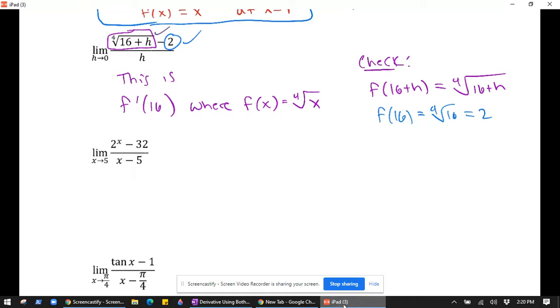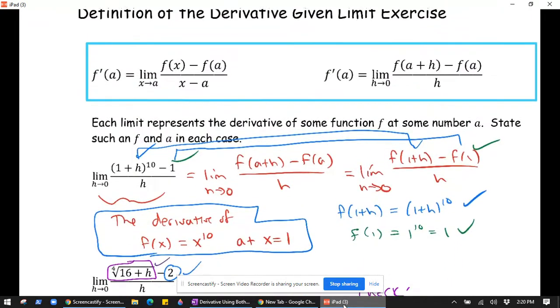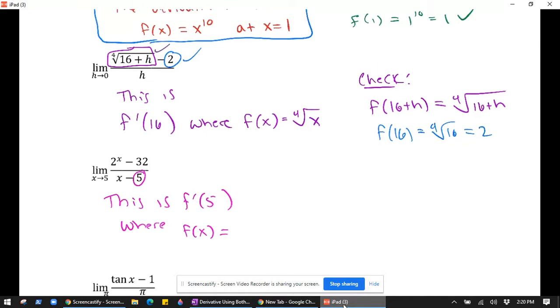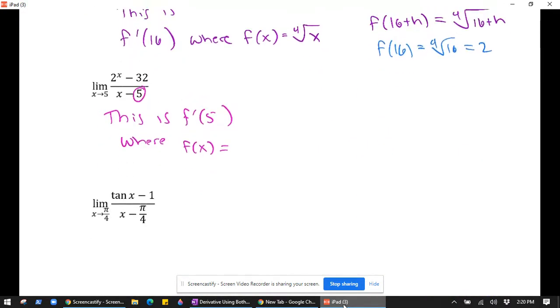This next one is probably a little easier because it's the left form. And a is just staring us right in the face, right? Clearly, the derivative is being, this is the definition of the derivative evaluated at x equals 5. So I'm going to write this is f prime of 5, where f of x equals, and again, this one's a little easier because f of x is just in the top left part of this expression. So it's just clearly 2 to the x.